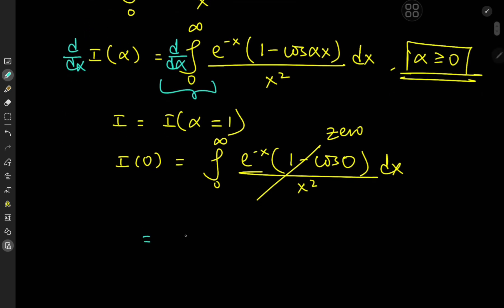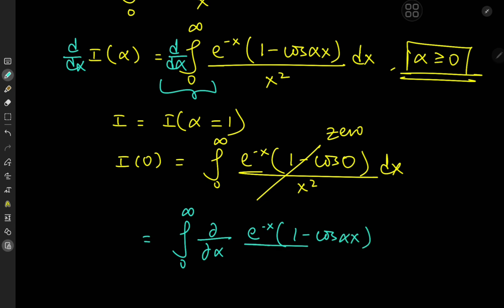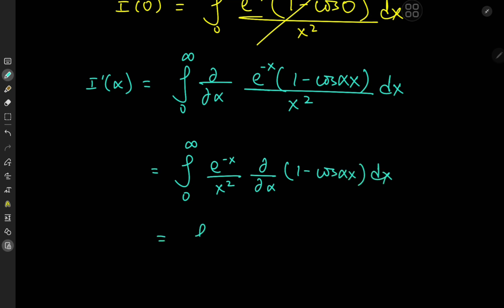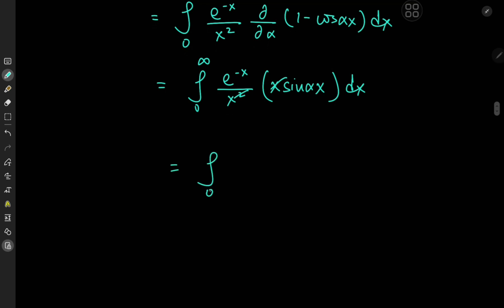So we can in fact switch up the order of the operators and write this as the integral from 0 to infinity of the partial derivative of e to the negative x times 1 minus cosine alpha x divided by x squared dx. Because we're differentiating partially with respect to alpha, the e to the negative x divided by x squared term is treated as a constant. We need the partial derivative of 1 minus cosine alpha x, which gives us the integral from 0 to infinity of e to the negative x divided by x squared times sine of alpha x times x due to the chain rule. With the x terms canceling, we arrive at the integral from 0 to infinity of e to the negative x times sine alpha x divided by x dx.